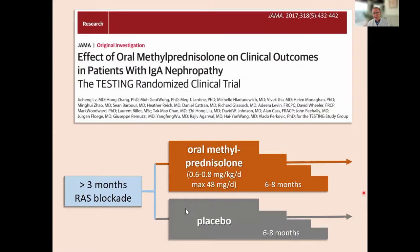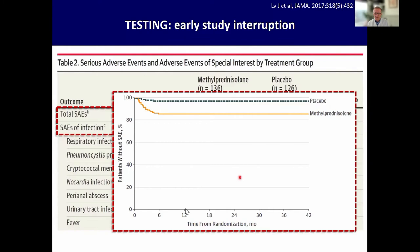This debate on whether to use steroids or not is fueled by the TESTING trial, which was meant to really resolve the question of should we give steroids or not. We initially started TESTING with a high-dose corticosteroid phase, up to 0.8 mg/kg/day of methylprednisolone. We had to halt the trial because — it had started in China — after about 260 patients, there were several casualties, lethal infectious complications, and they all clustered in the face of high-dose corticosteroid therapy. The data safety board said you cannot continue this trial as is.